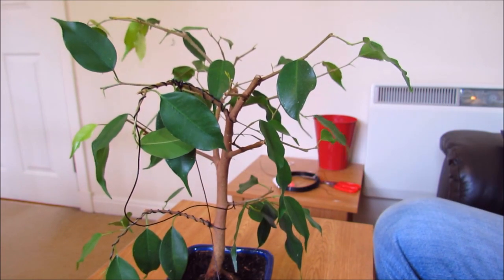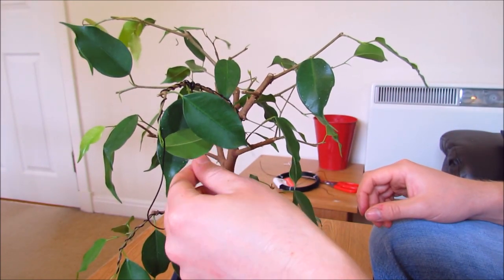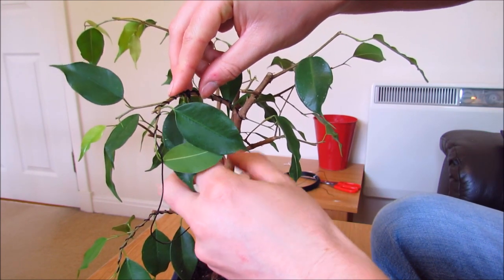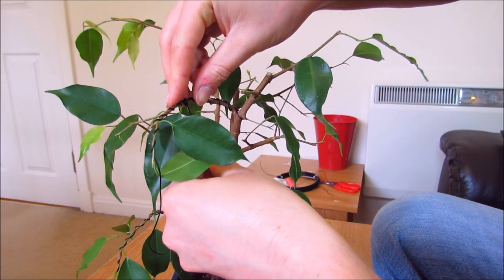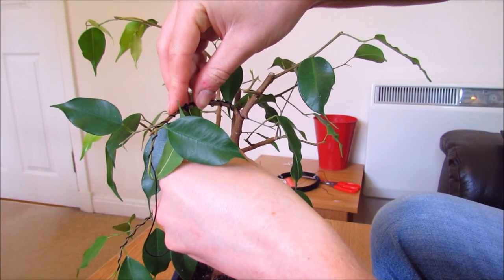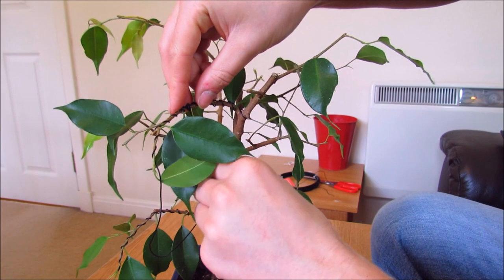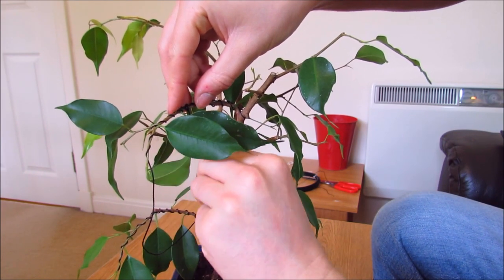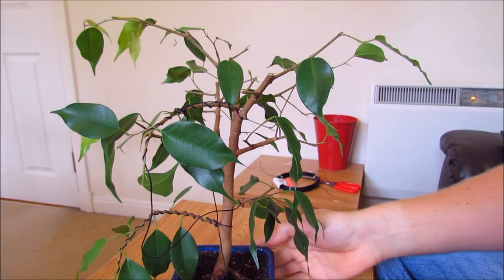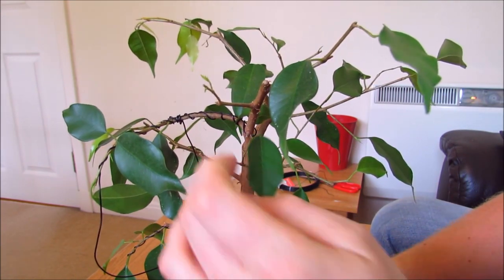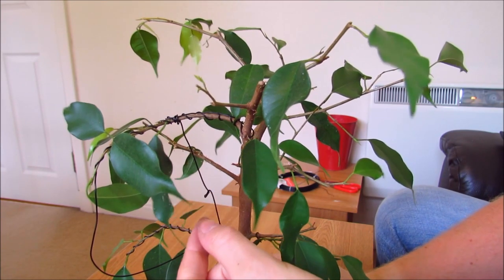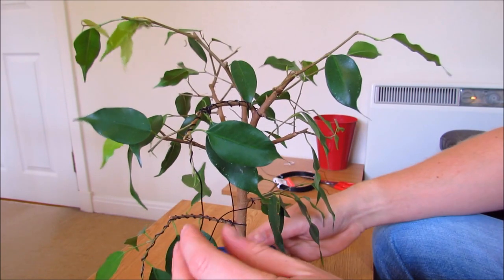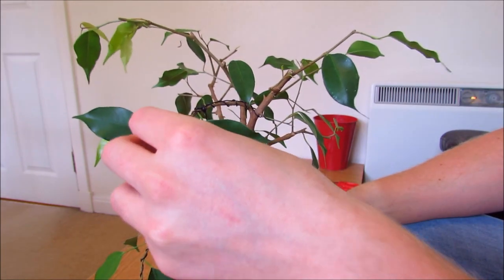And if I want to, I can further tension this by making a loop. So I'll pull that down there and I'll just make a very tiny loop in the wire and twist it. And what I can do is every time I want to get that tension any higher, I can just twist that and it'll slowly tension it. But that's about as much as I really want to pull it down. I don't want to pull that down any further. So it looks quite ugly with all these wires.